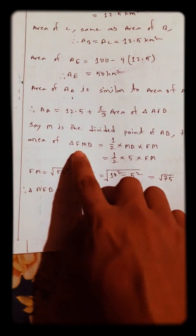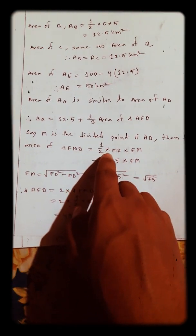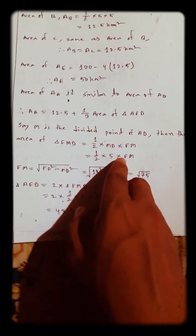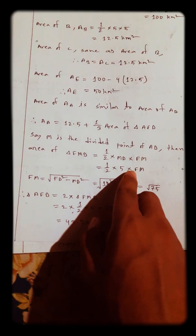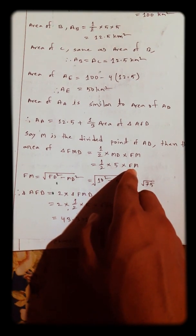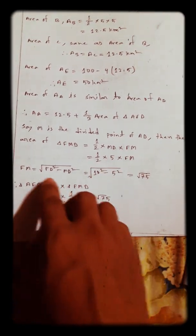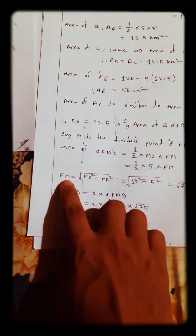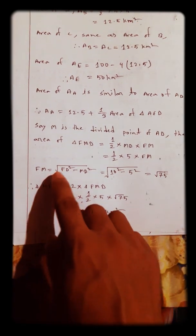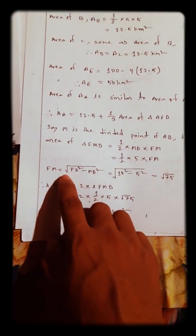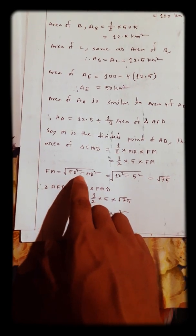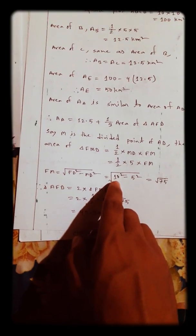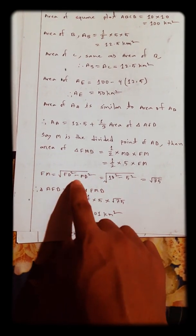The area of triangle FMD equals half × base × height, where MD = 5 and we need FM. Using the Pythagorean theorem: FM = √(FD² − MD²), where FD = 10 kilometers and MD = 5 kilometers.